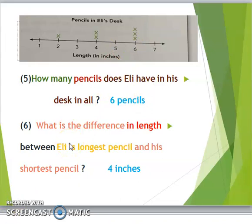What is the difference in length between Eli's longest pencil and his shortest pencil? Look here. This is the length. We have 1, 2, 3, 4, 5, 6, 7. So, the shortest pencil is 1? No, because we don't have any pencils here. So, the shortest pencil here is 2. And the longest pencil is 6. The difference means minus. So, it's 6 minus 2 equals 4 inches. Thank you for watching.